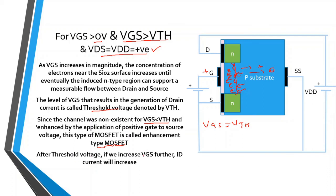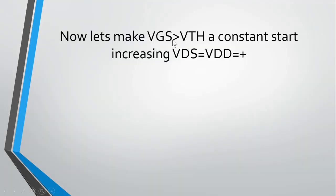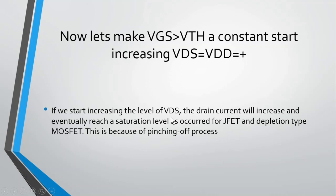After the threshold voltage, if we further increase VGS, the gate becomes more and more positive, attracting more electrons near the SiO2 layer, and the drain current increases. Now, if we set VGS greater than the threshold voltage at a constant value and start increasing VDS, the drain current will increase and eventually reach a saturation level — just as occurred for the junction field effect transistor and the depletion type MOSFET. This saturation level is reached because of the pinch-off process.